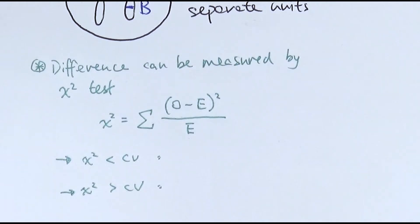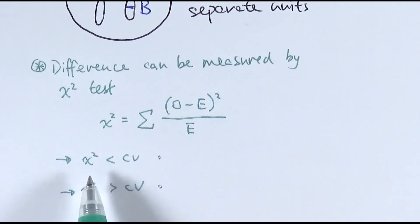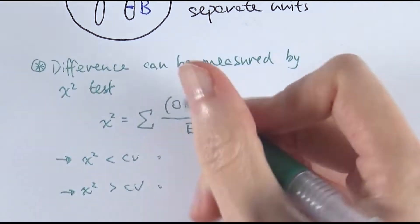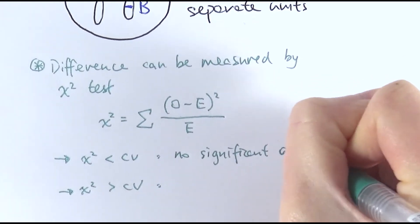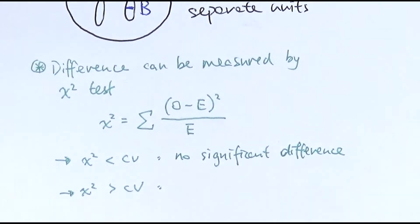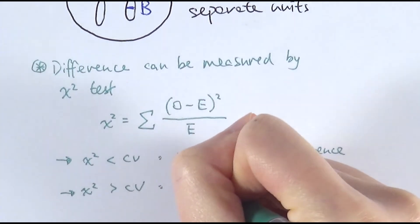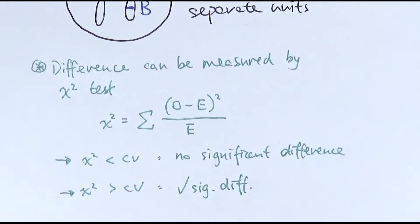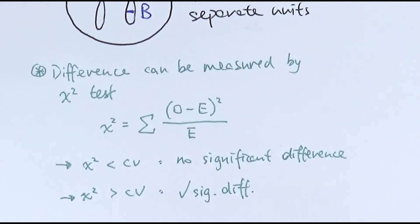Same as all other stats tests, we compare the chi-squared value with the critical value at p equals 0.05, which is about the five percent probability. For more information, check out that maths video I've made previously. Basically, if the chi-squared value is smaller than the critical value, then we say there is no significant difference between the two values - the observed ratio is the same as the expected ratio, meaning this is a dihybrid inheritance. However, if the chi-squared value is bigger than the critical value, then yes, there is a significant difference, meaning something else has caused the observed ratio to be different. Then the question will ask can you explain why there is a significant difference.